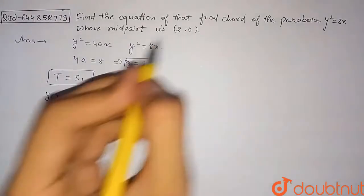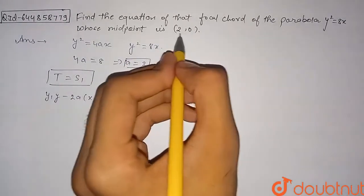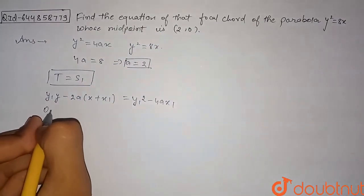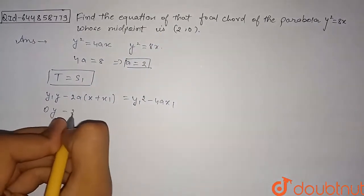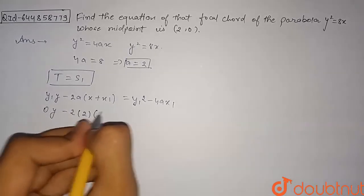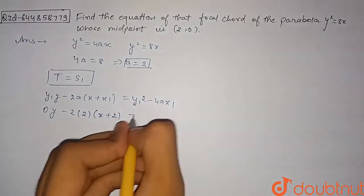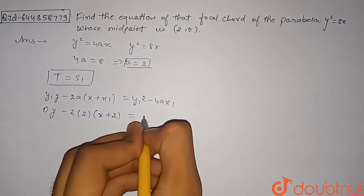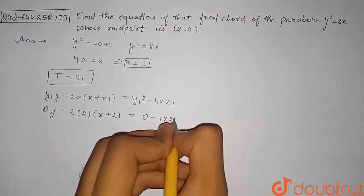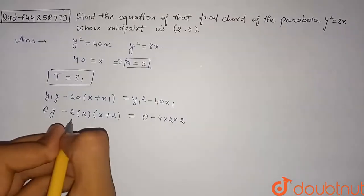We substitute the midpoint (2, 0) and value of a = 2 into the equation. So y₁ = 0 gives 0·y, then −2·a = −2·2 = −4, multiplied by (x + x₁) which is (x + 2). On the right side, y₁² = 0² = 0, minus 4·a·x₁ = 4·2·2.